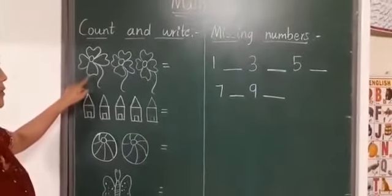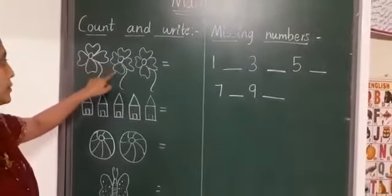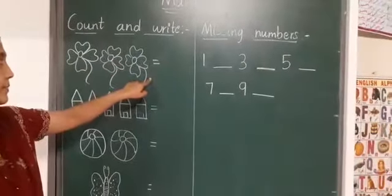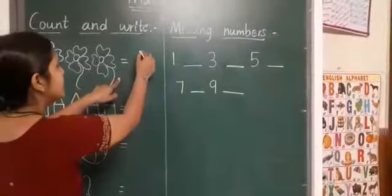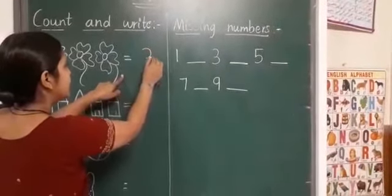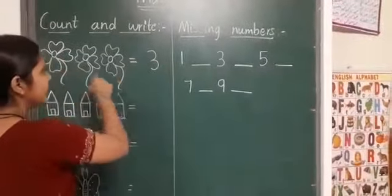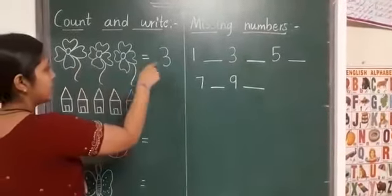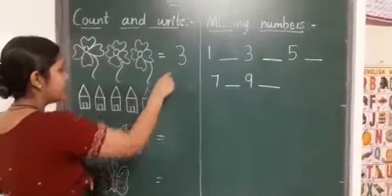Count with miss. One, two, three. There are three flowers. You have to write the number three in front of these flowers. Okay? One, two, three. The number three. Next.